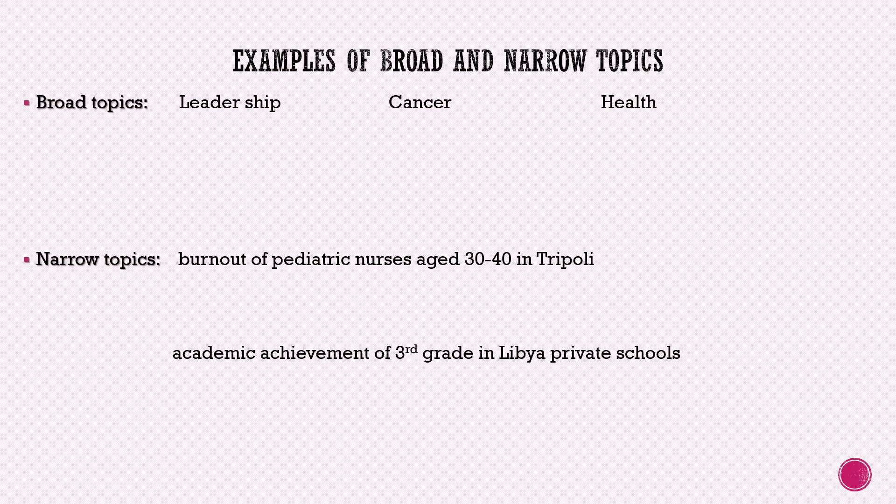For narrow topics, we have 'the burnout of pediatric nurses aged 30 to 40 in Tripoli.' Here we have specified which nurses — pediatric — and narrowed by age range and city. It's way too specific and we cannot talk about that much. Similarly, 'the academic achievement of third graders in Libyan private schools' is way too narrow, specifying third grade and private schools only.